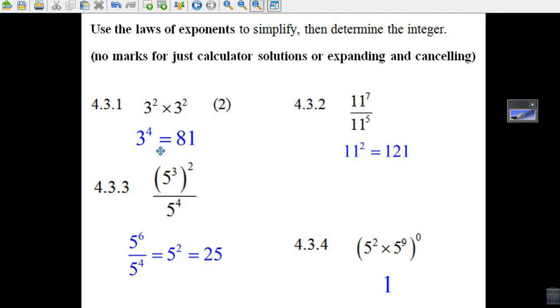Now, you can do it any way you like. You can go 3 times 3 is 9, times 3 is 27, times 3 is 81. You could have used your calculator to write down 81. But if you didn't use the law of exponents, you didn't get any marks.